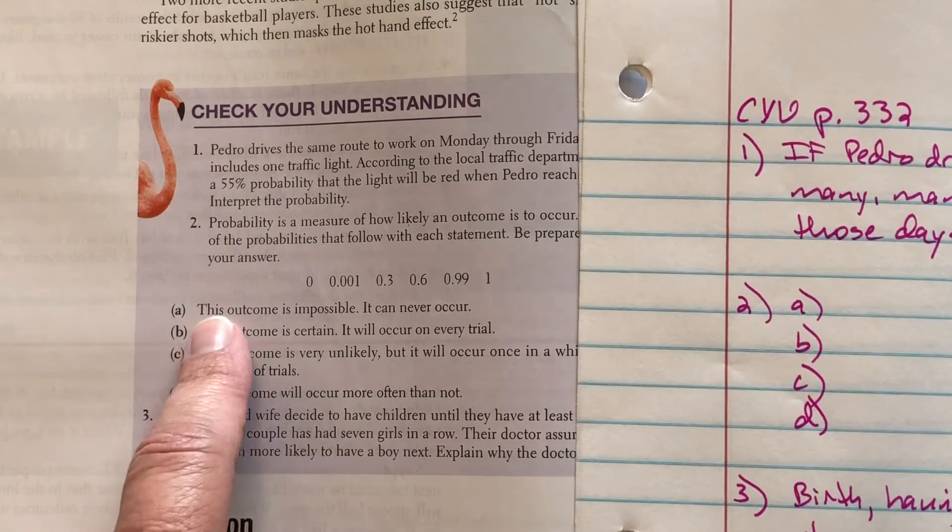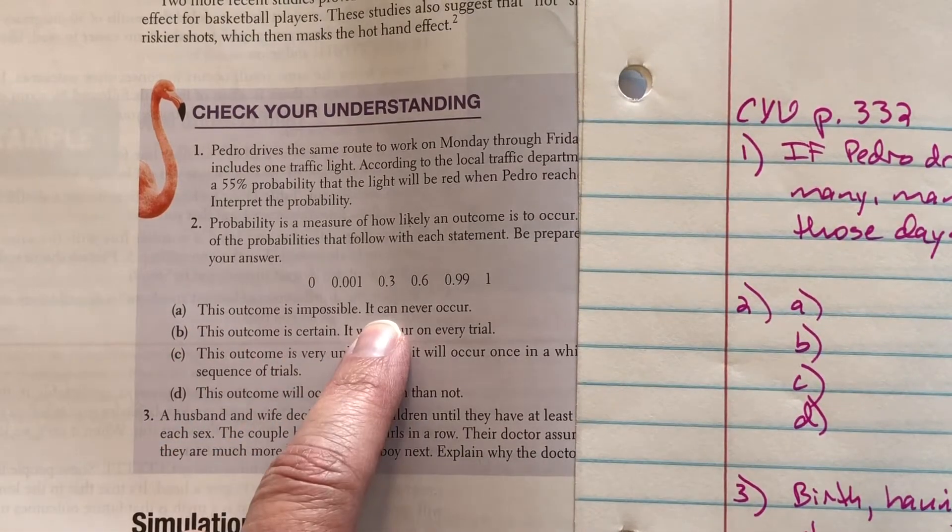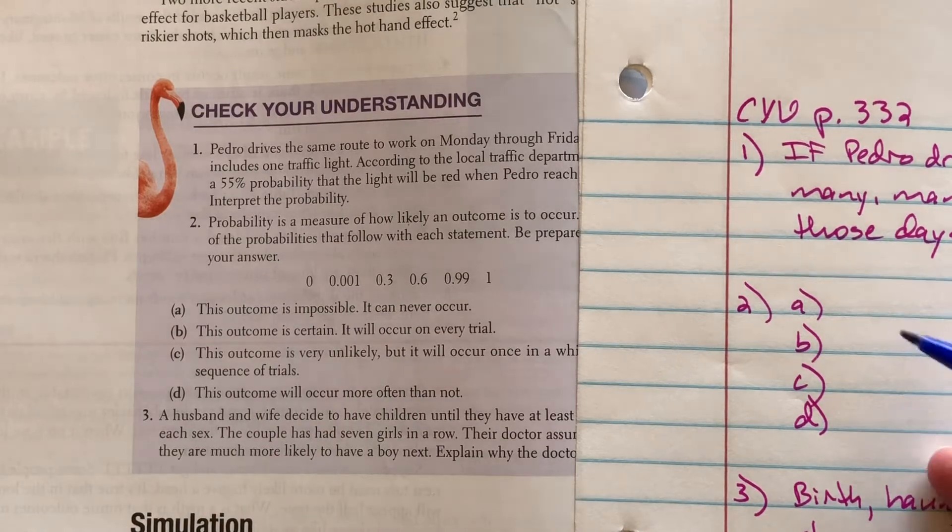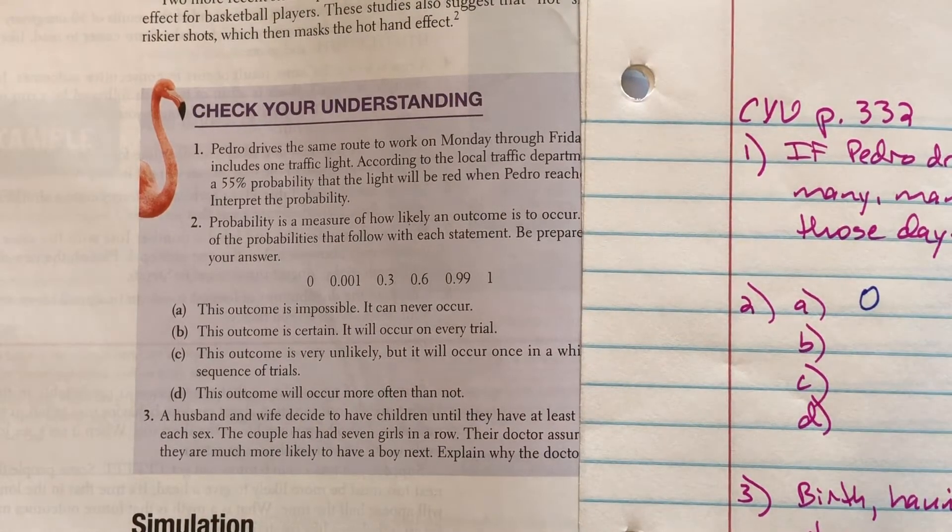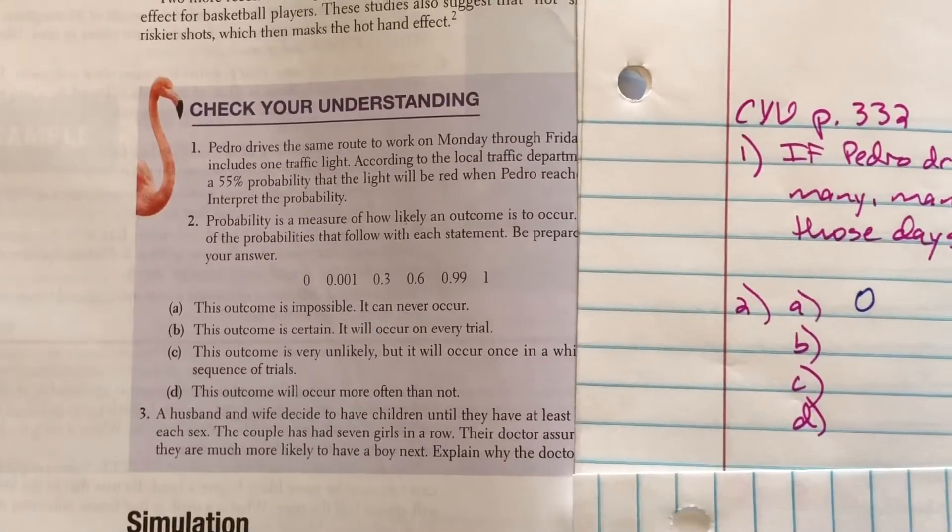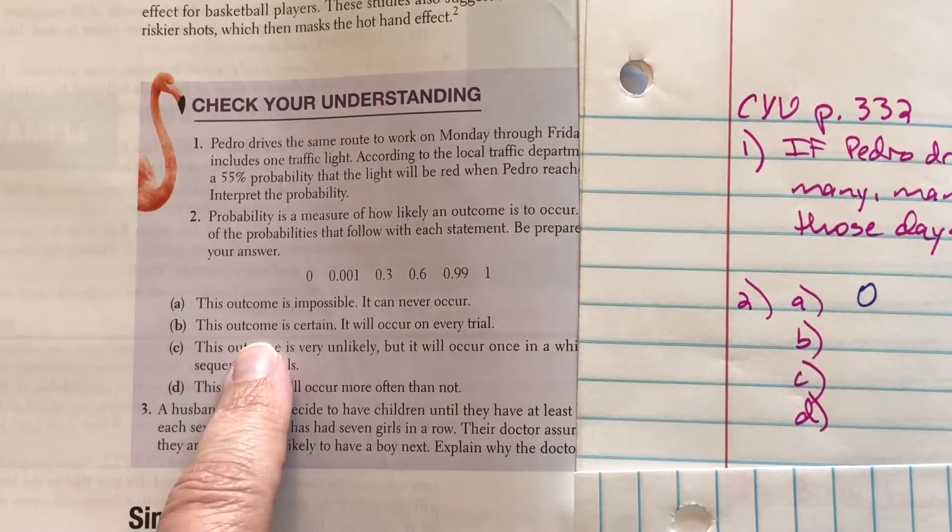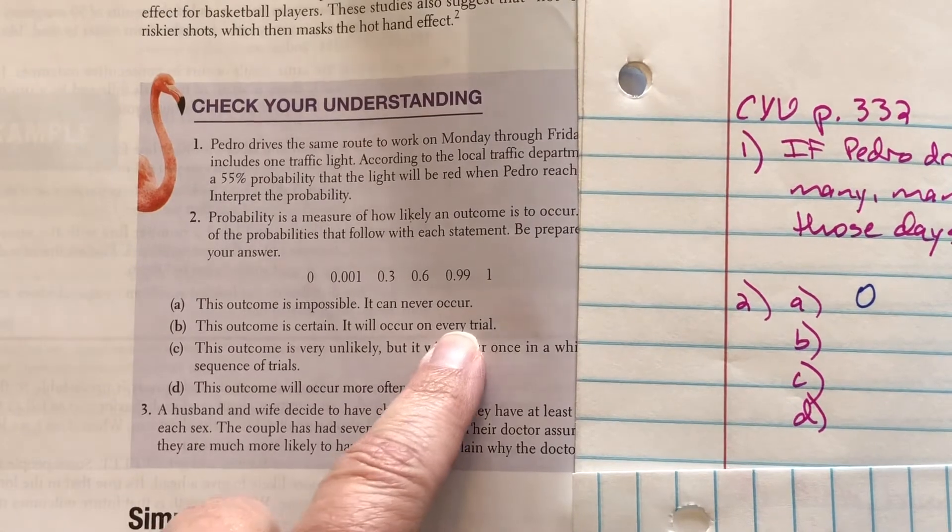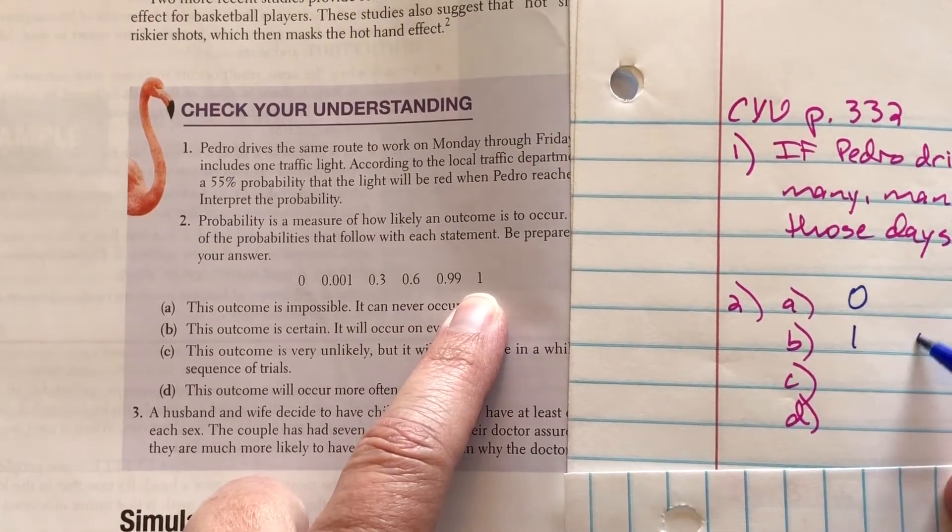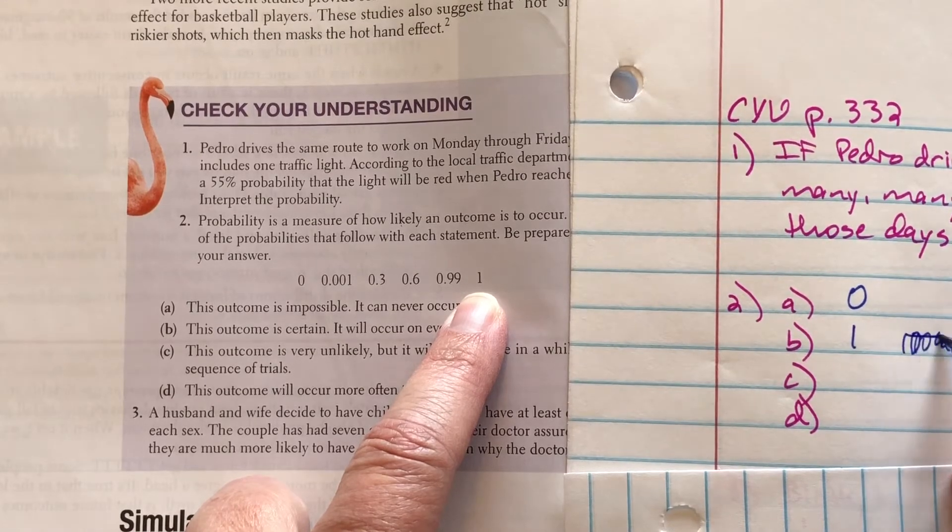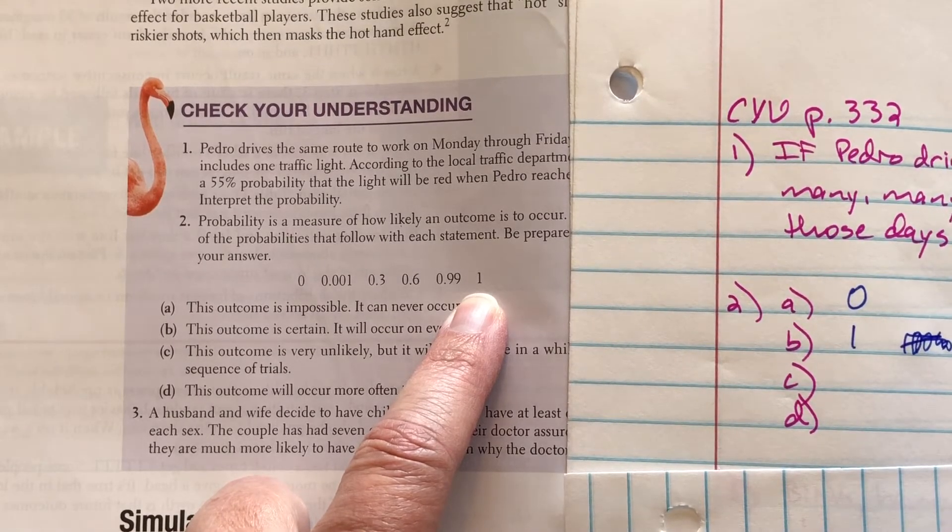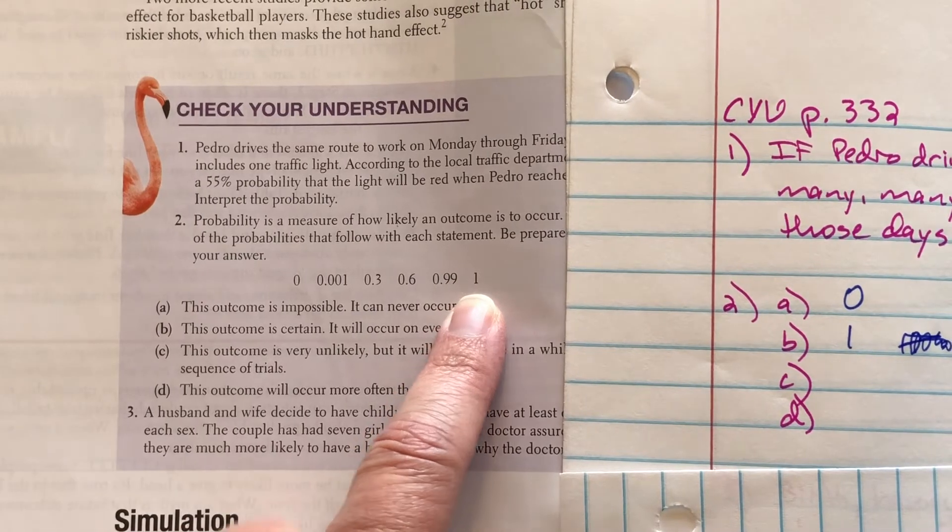So let's see which one matches which. The outcome is impossible. It means it will never occur. So that's 0. Probability will never occur. The outcome is certain. It will occur on every single trial. Well, that's a probability of 1. Let's put percentages with these. That's 100%. This is a 0%.